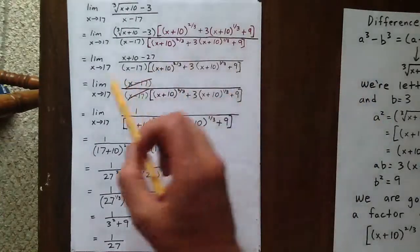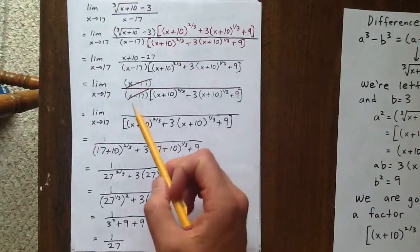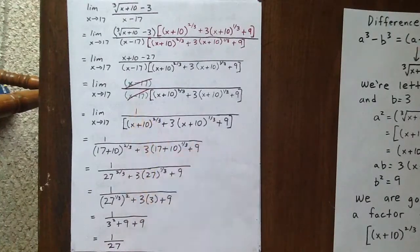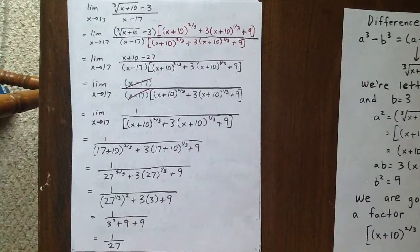Now, when you have an indeterminate form and you're taking the limit as x goes to 17, your offending factor is likely going to be x minus 17, and we somehow want to be able to cross that out of numerator and denominator.